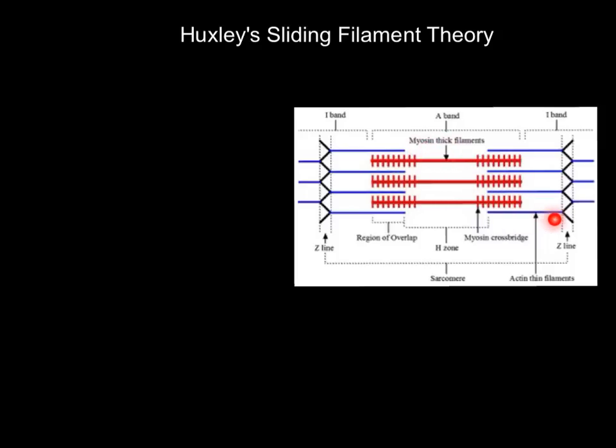These red filaments are myosin filaments — they are thick filaments. The blue ones are actin, or thin filaments. They are both made of protein. When we do resistance training, we slightly damage these actin and myosin filaments, creating micro tears. When we recover and eat protein, they repair a little bit thicker and stronger each time. Myosin will always be the thicker filament; actin will always be thinner.